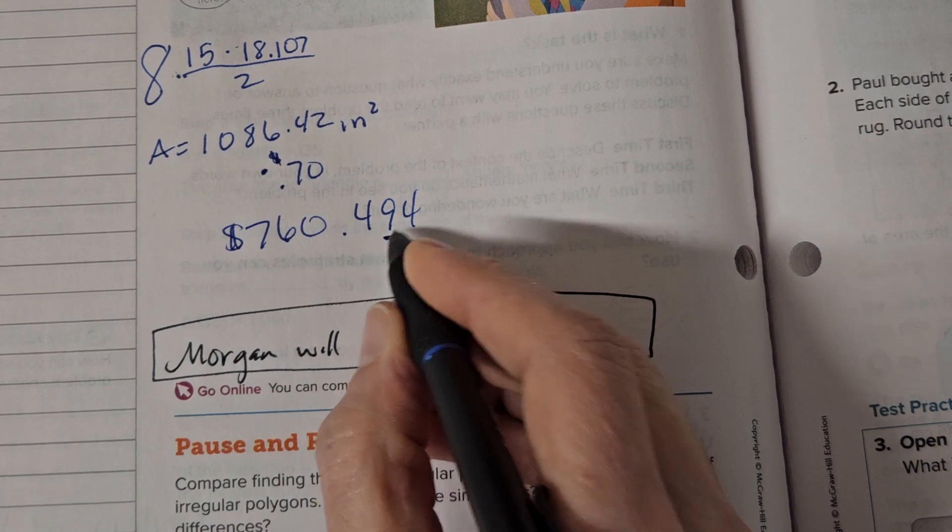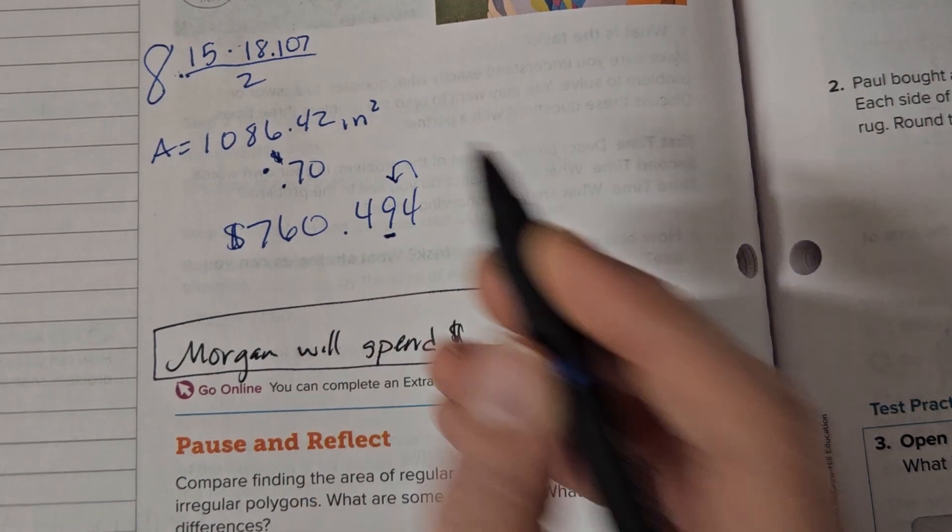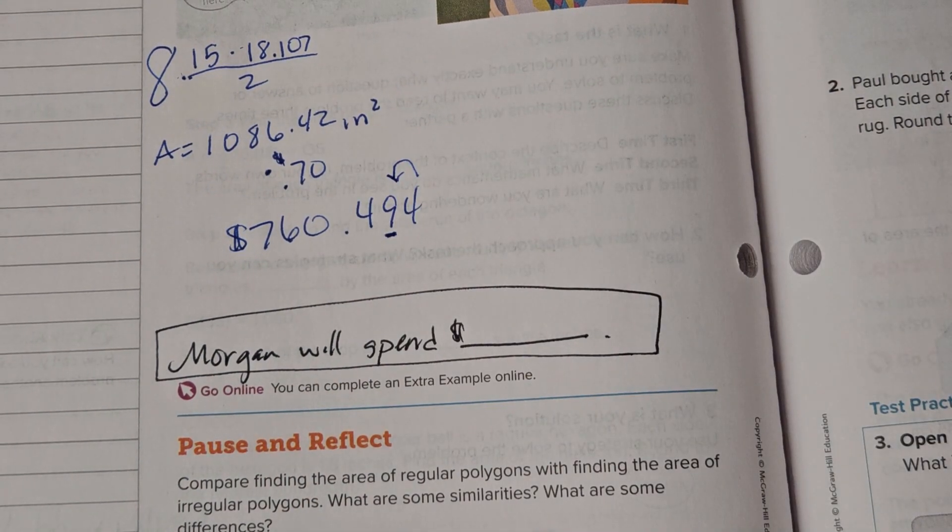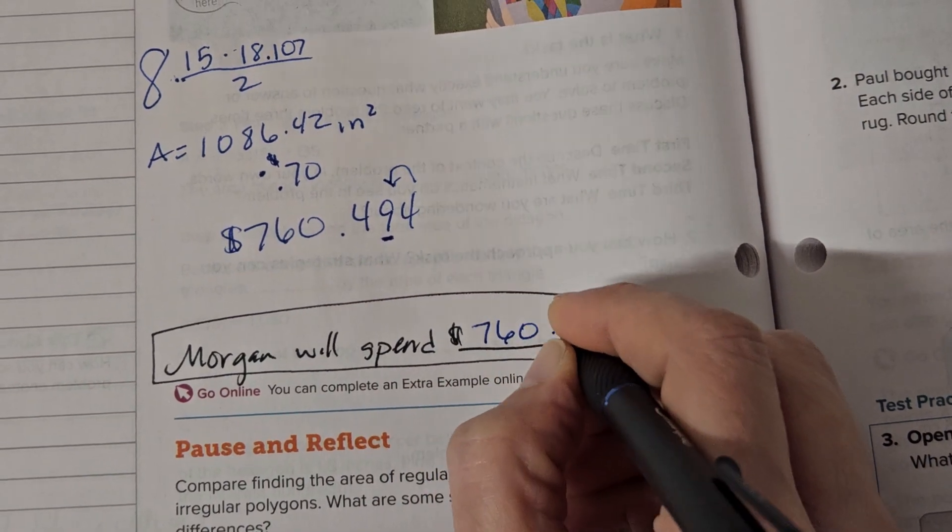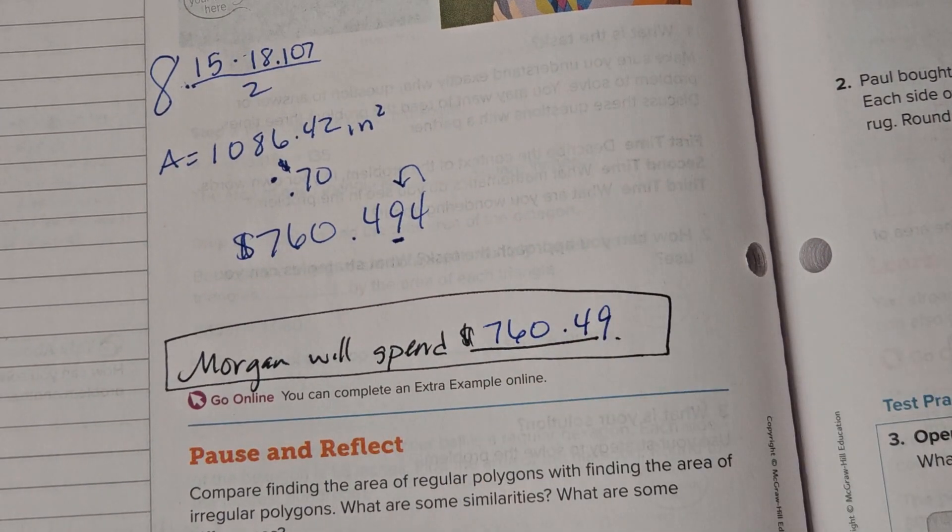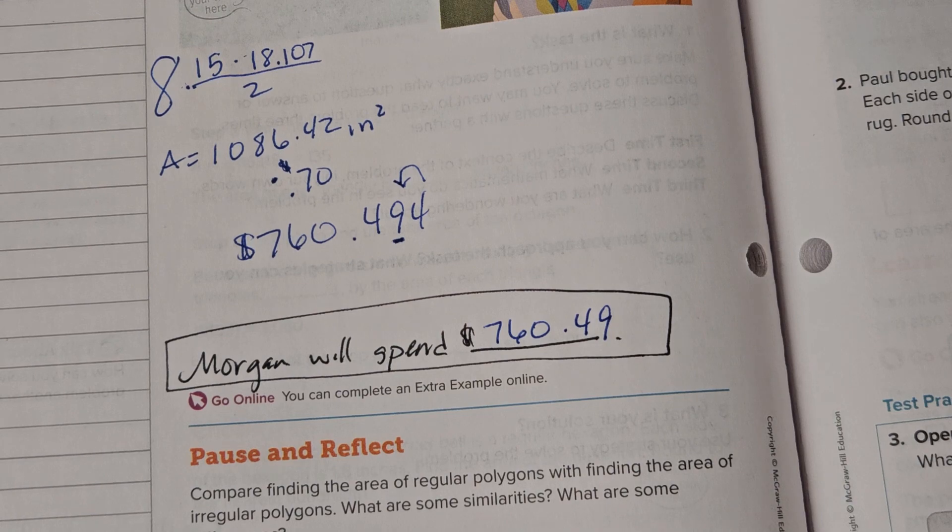So here's the penny in the hundreds column. Does the 4 make the 9 go up or stay the same? Stay the same. $760.49. Okay. Good luck.